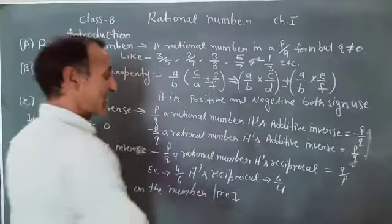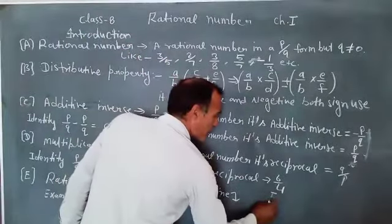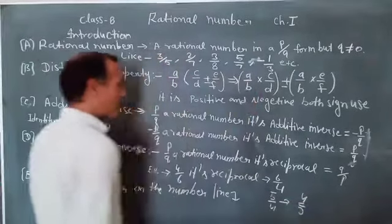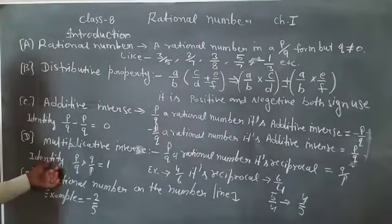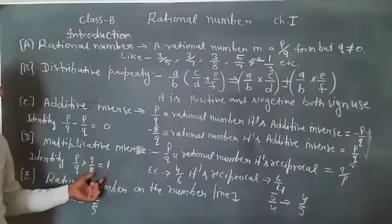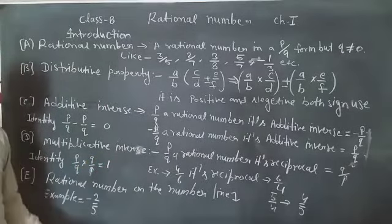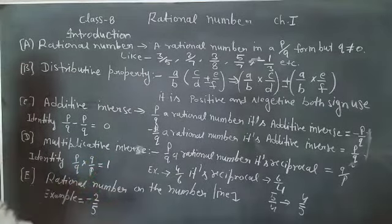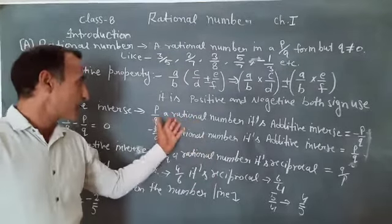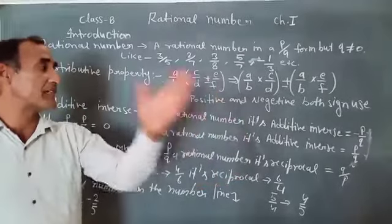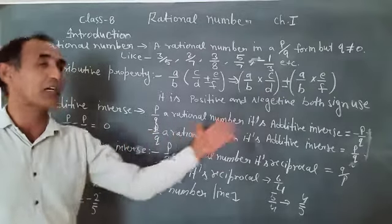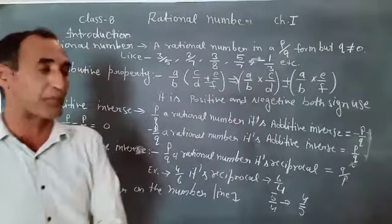Example: 4 by 6 is reciprocal 6 by 4. Any other example, 5 upon 4, its reciprocal 4 upon 5. Its property is identity P upon Q, its reciprocal Q upon P into 1. It is called the identity. But questions come in the examples similar of this type. P upon Q convert into additive inverse negative form. Minus P upon Q convert into the positive form P upon Q.